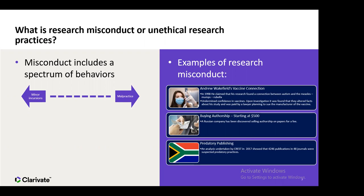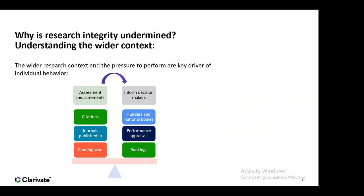Bringing it closer to home — South Africa also faces challenges around predatory publishing, especially within the context of the South African research environment where subsidies are given to universities for publications within specific lists. CREST, a bibliometric school housed at Stellenbosch University, in 2017 released a paper showing that 4,246 publications in 48 journals were suspected of predatory practices — quite worrying, because those publications obviously received subsidies paid out by the Department of Higher Education.